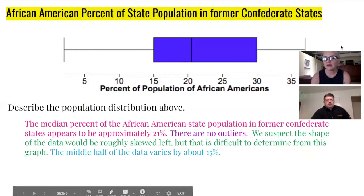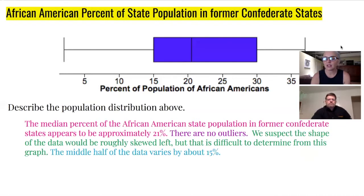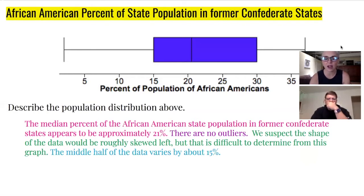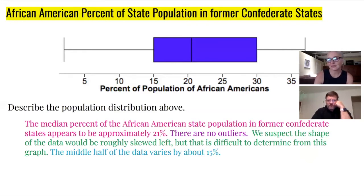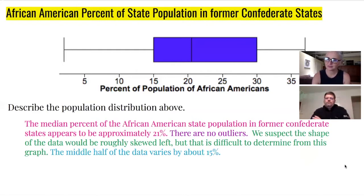A sample answer could sound like: 'The median percent of the African American state population in former Confederate states appears to be approximately 21. There are no outliers. We suspect the shape of the graph would be roughly skewed left, but it is difficult to determine in this graph, and the middle half of the data varies by about 15.' Use your wishy-washy words — don't lock in anything you're not certain about.